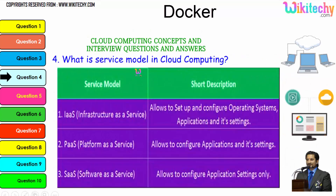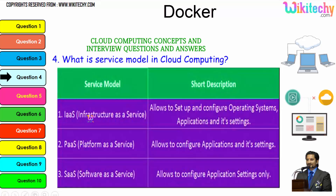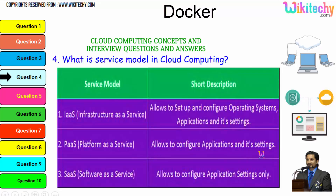The major service models in cloud computing are three. Infrastructure as a Service allows you to set up and configure the operating system, application, and its settings — you are given a server and can install any operating system you want. Platform as a Service allocates you a specified operating system and you can put any applications and settings on it. Software as a Service gives you a software where you can adjust application settings.